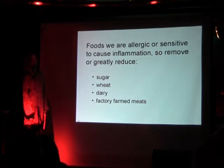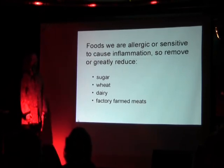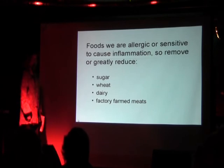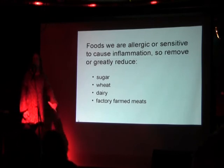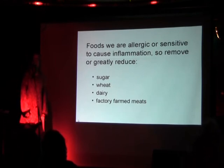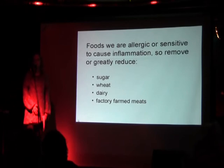Foods we are allergic or sensitive to cause inflammation. So remove or greatly reduce sugar, wheat, and dairy. Factory farmed meats aren't healthy — that includes chicken and factory farmed eggs. These animals are fed grains that don't give them the omega-3s they should be producing, so they can't create the omega-3s and 6s that they should.